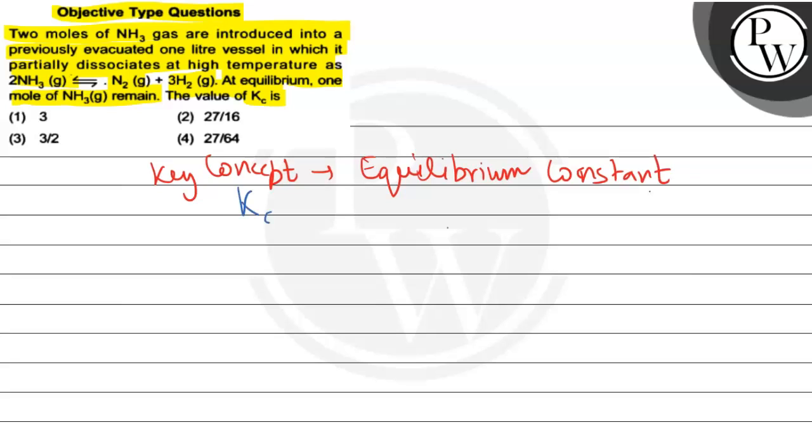If we talk about equilibrium constant, the equilibrium constant can be denoted as Kc. And that is basically the product of the concentration of the products raised to their respective stoichiometry, divided by the product of the concentration of the reactants raised to their respective stoichiometry.